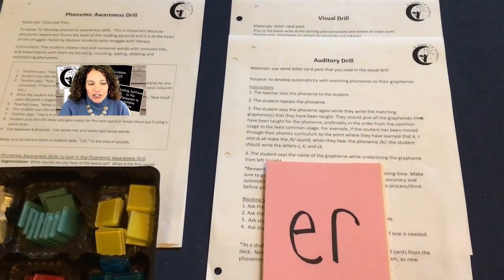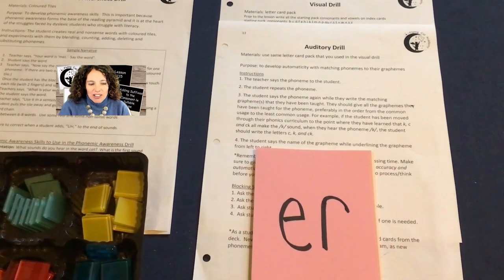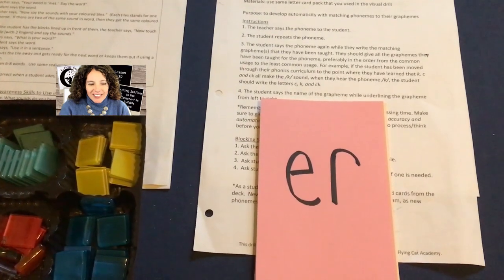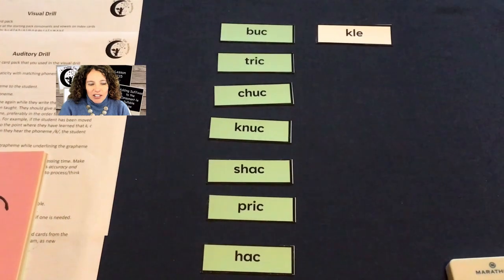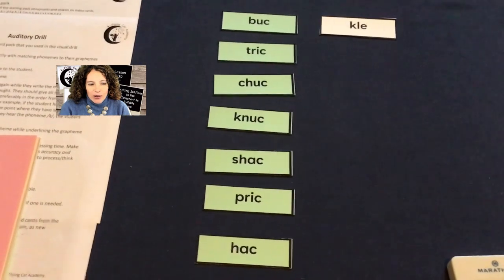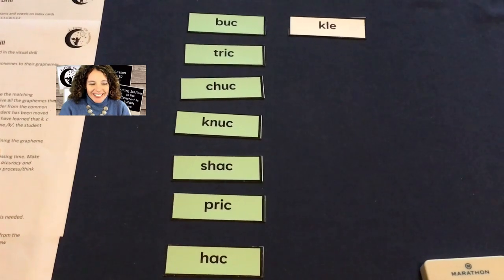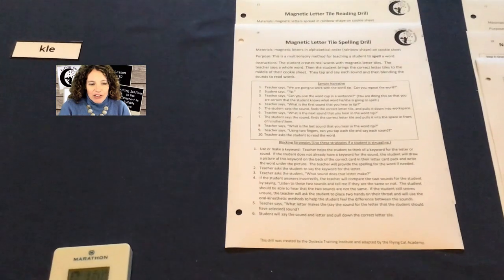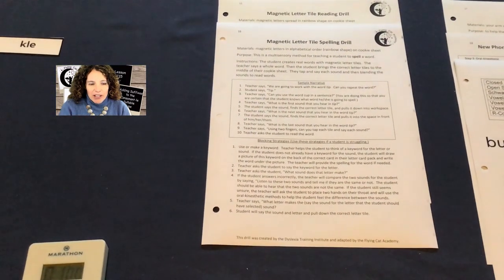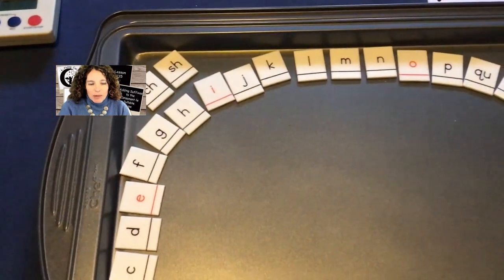Moving on to the visual drill and auditory drill, you'll need the teacher instruction sheets and the student's card pack, remembering that you're removing the sounds as they're mastered. You'll need a syllable card drill today so you'll have to have that one cut out and ready to go, although I will provide it in the lesson. We'll also have the magnetic letter tile drills for reading and spelling, so you'll need the teacher instruction sheets and the cookie sheet with the letters spread in a rainbow shape.